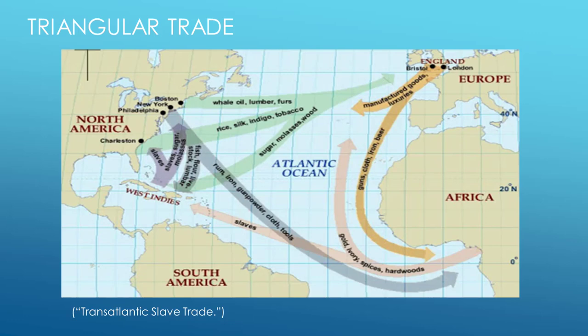Rodney writes: 'The question as to who and what is responsible for African underdevelopment can be answered at two levels. First, the answer is that the operation of the imperialist system bears major responsibility for African economic retardation by draining African wealth and by making it impossible to develop rapidly the resources of the continent. Second, one has to deal with those who manipulated the system and those who are either agents or unwitting accomplices of the said system.' While it is not a direct corollary to Washington Black, we can see how the colonial system and its agents constantly undermine Washington along his journey. The novel makes us walk along this triangle trade, in a way, and forces us to see the humanity in someone who has been denied his own.